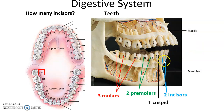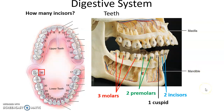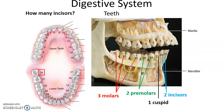If you look at one quarter of the mouth, you can see that we would have three molars, two premolars, one cuspid, and two incisors. That means in the entire mouth, counting all the teeth, you would have eight incisors, four cuspids, eight premolars, and twelve molars.